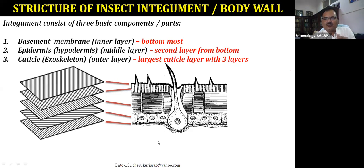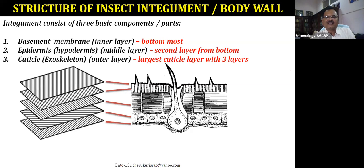To the basement membrane, all the muscles attach. The outermost part is the cuticle layer, and the innermost part is the basement membrane. Always remember: there are three important layers — the bottom-most thin basement membrane (non-living), the epidermal cells (single-cell, the only living structure), and the outermost cuticle layer, which is the largest layer.